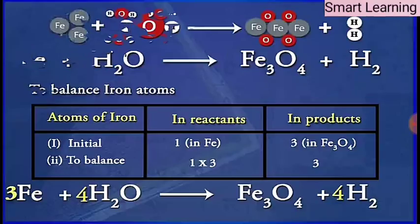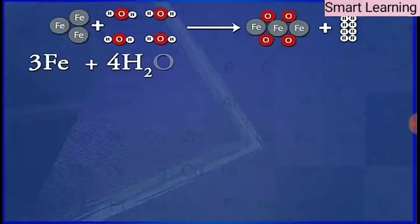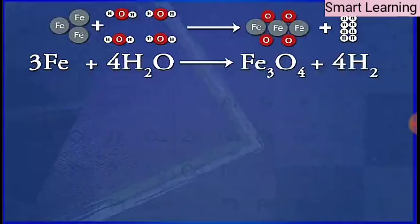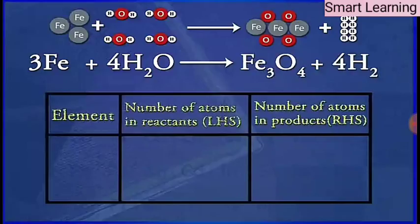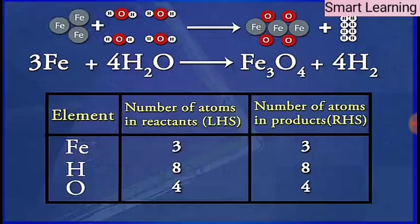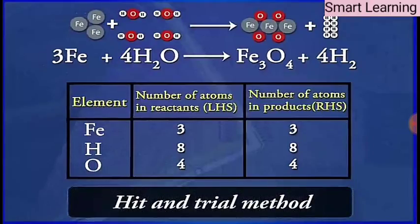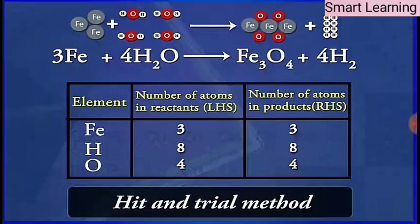Finally, to check the correctness of the balanced equation, let us count the atoms of each element on both sides of the equation. This method of balancing a chemical equation is called the hit and trial method, as this method employs making trials to balance the equation by using the smallest whole numbers as coefficients.